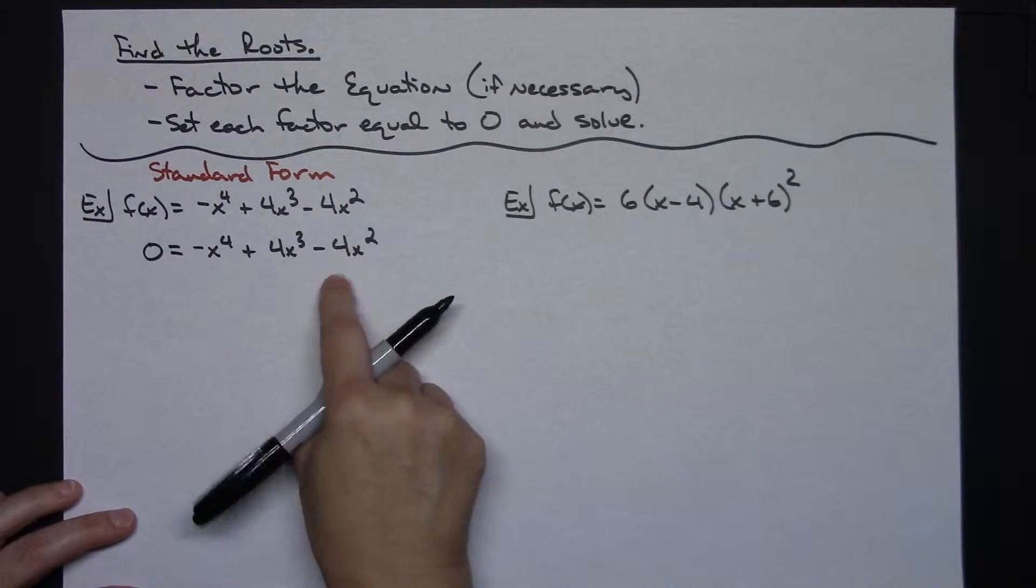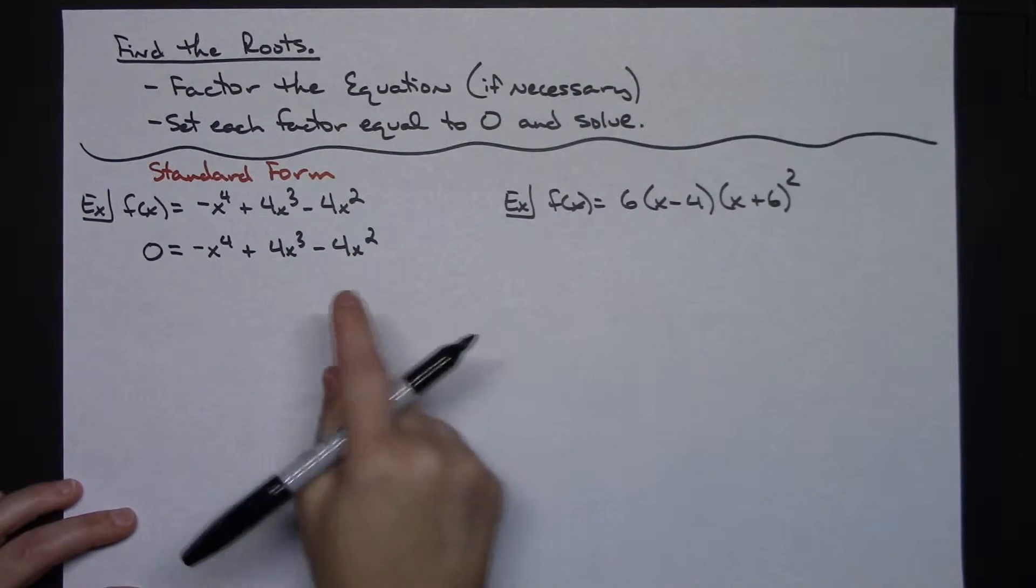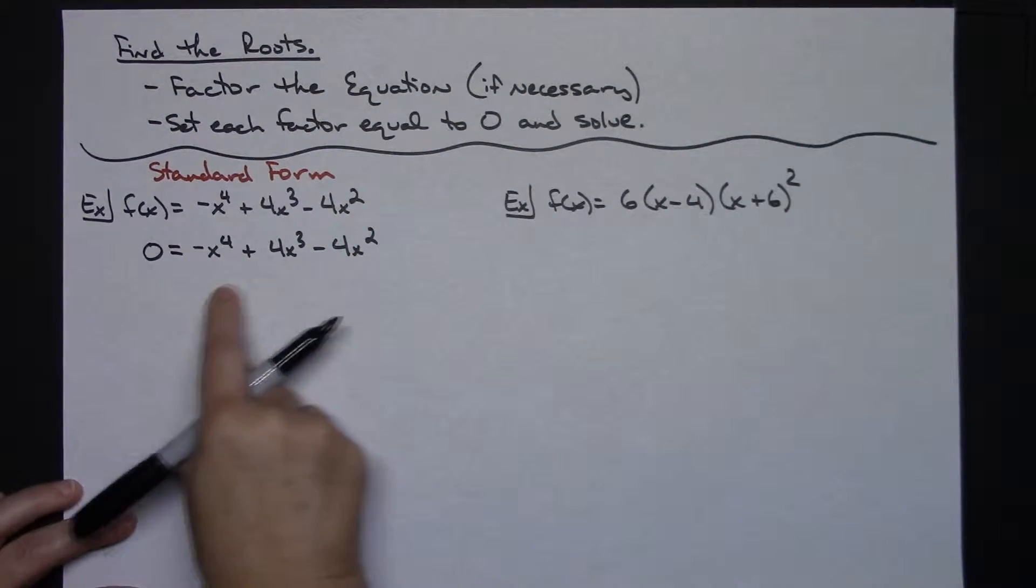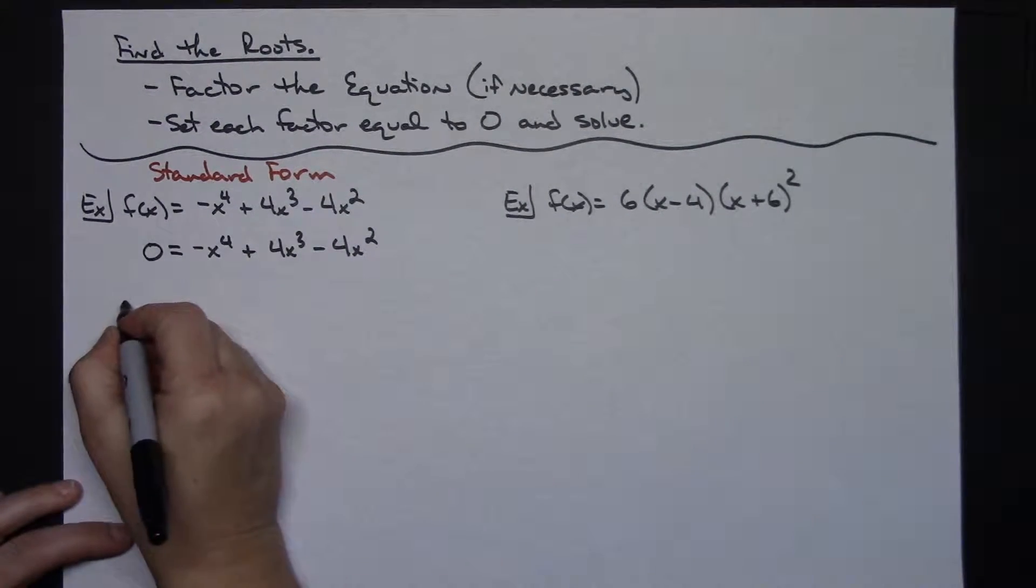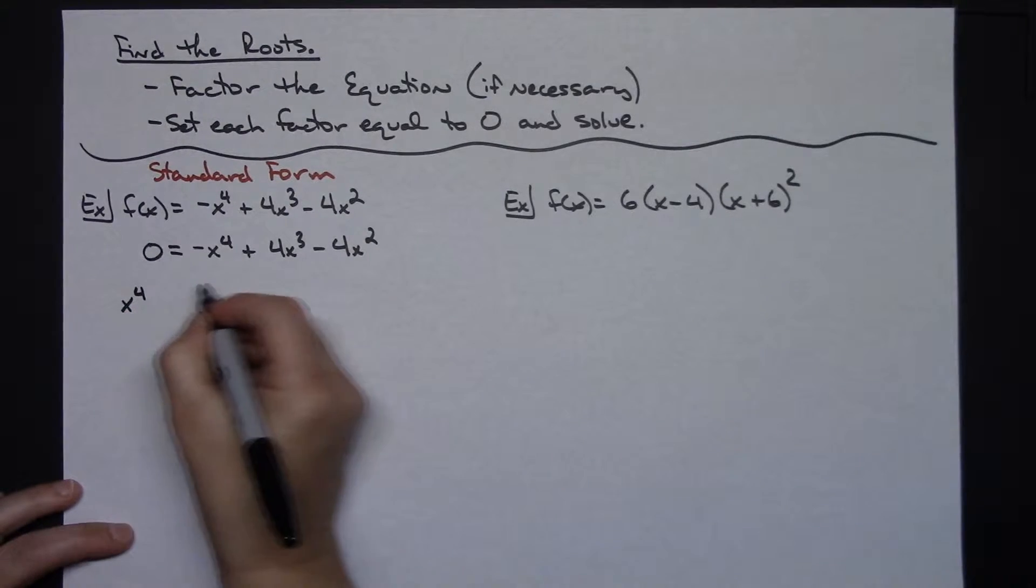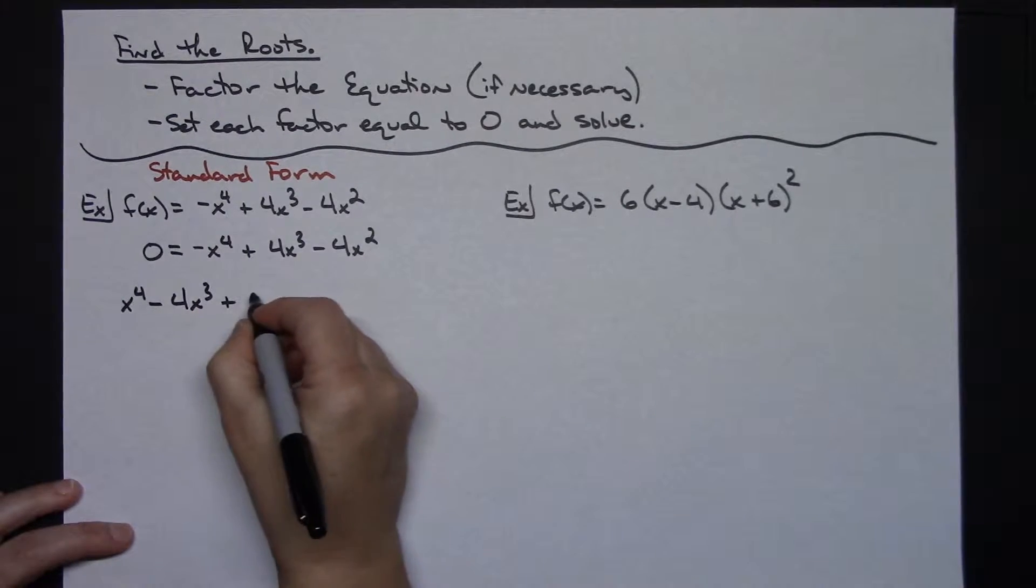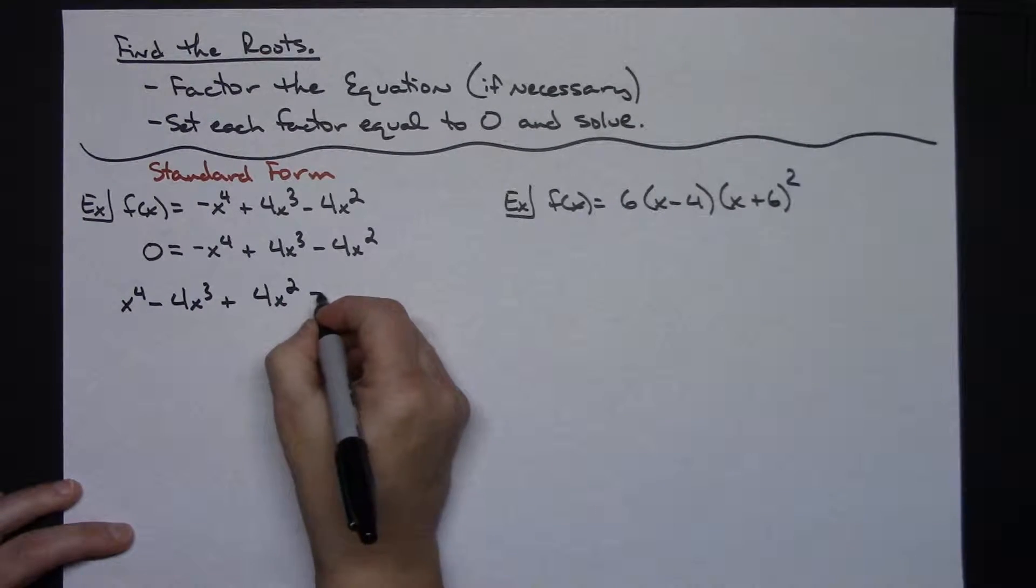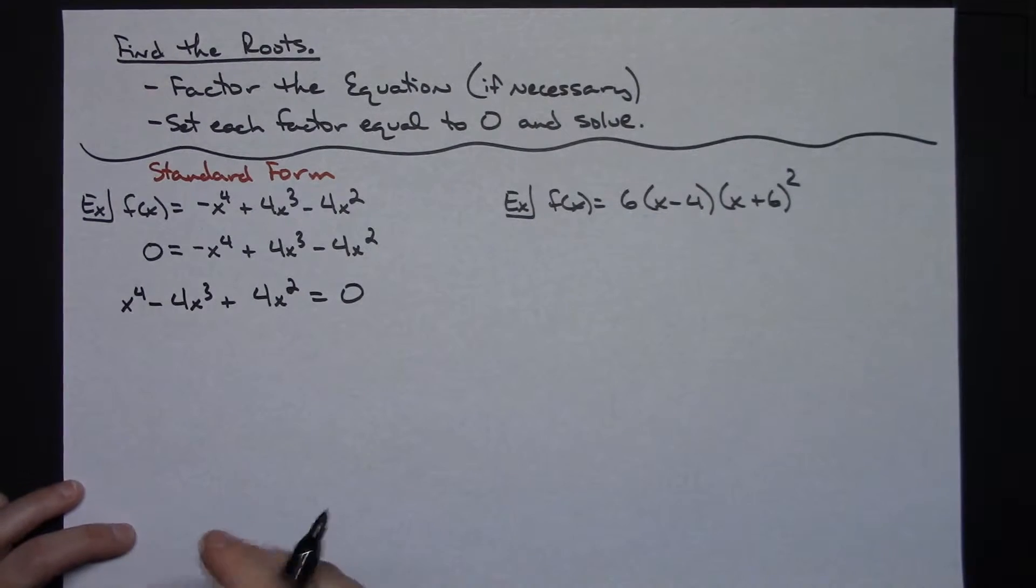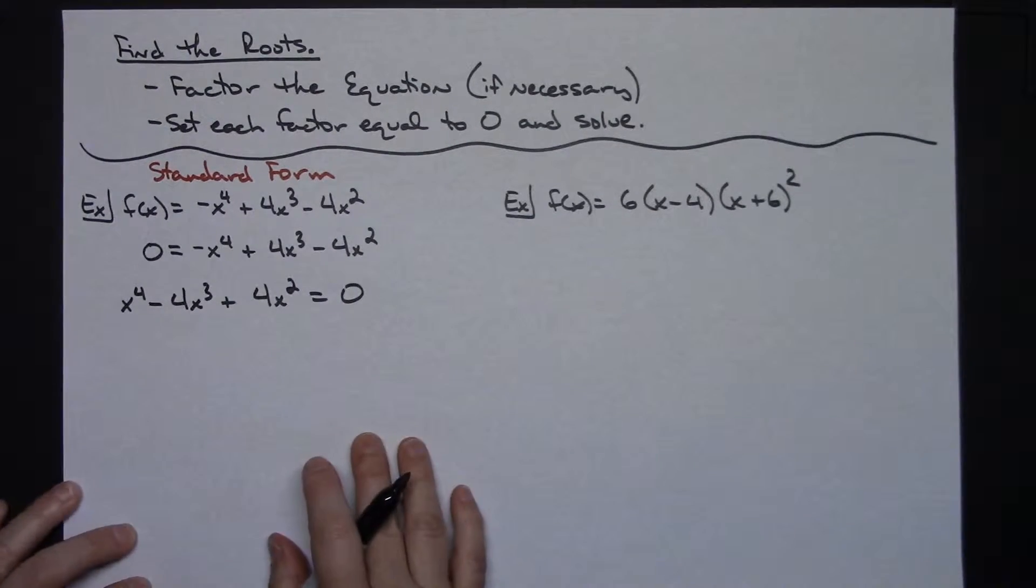I think that's what I'm going to do because I really like the equal zero on my right hand side anyway. So I'm going to move everything over to the left. Then I'll have a positive x to the fourth, a minus 4x to the third, and a positive 4x squared equals zero. I moved everything to the left. Now I can factor this.